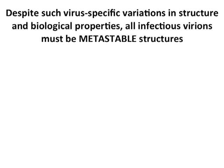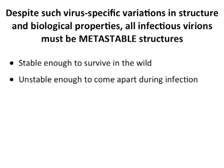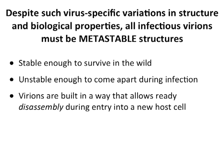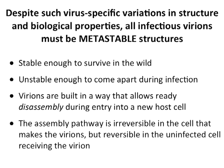All virions are metastable. They have to survive in the environment, but they have to come apart upon infection. So they are built in a way that allows disassembly. The assembly pathways that lead to virion particles are not reversible for the most part — that is what makes quality control of assembly work. Yet when the virus encounters some condition, like low pH in an endosome, it can come apart again. Those conditions cannot be encountered during assembly.